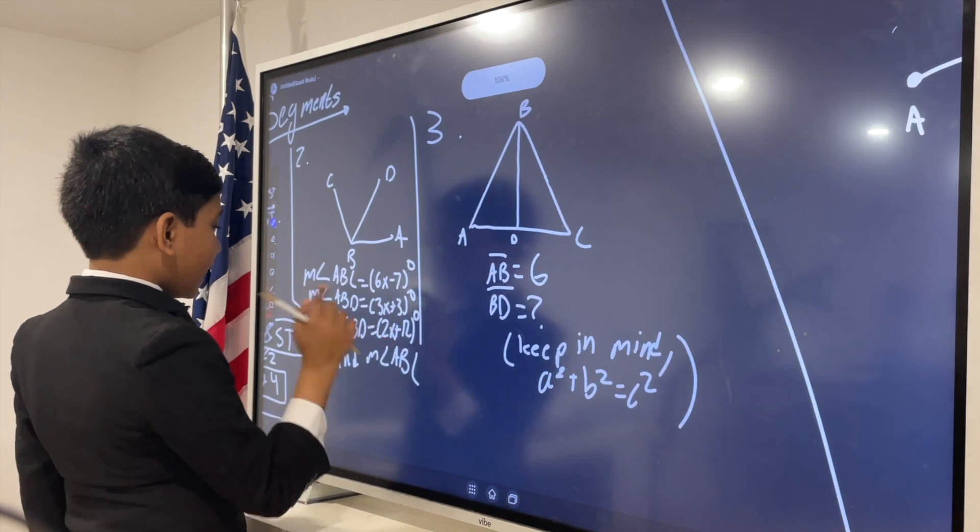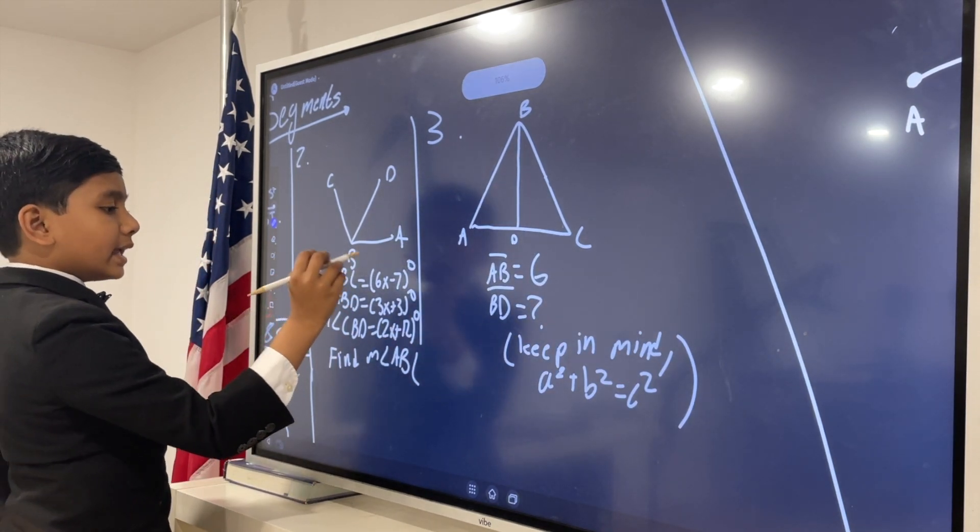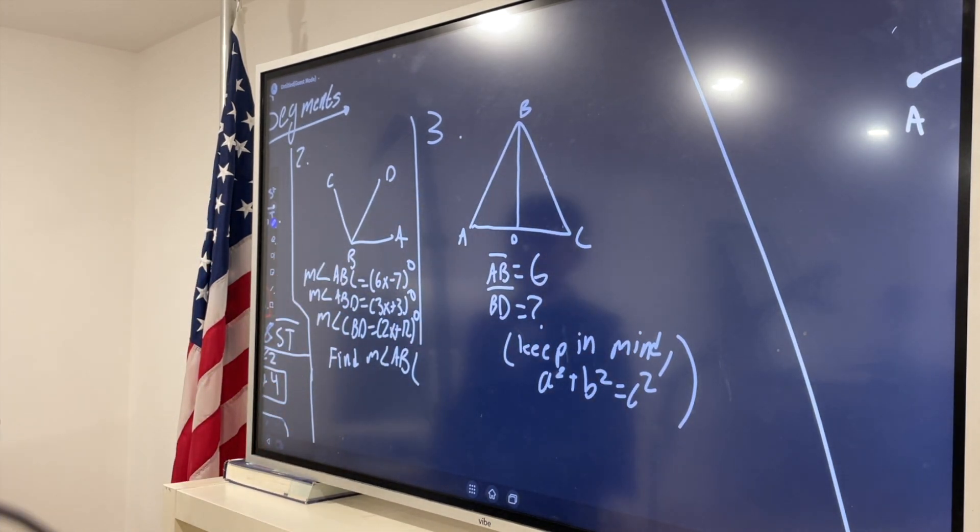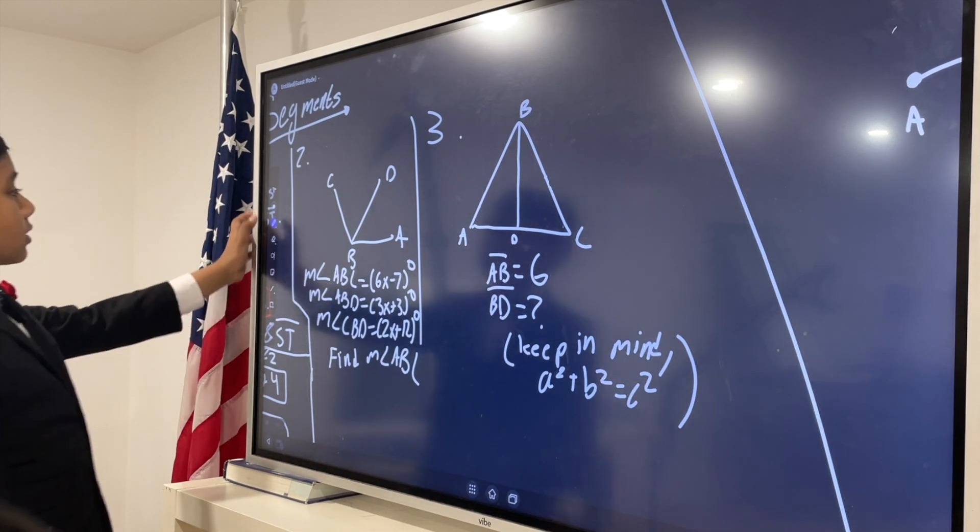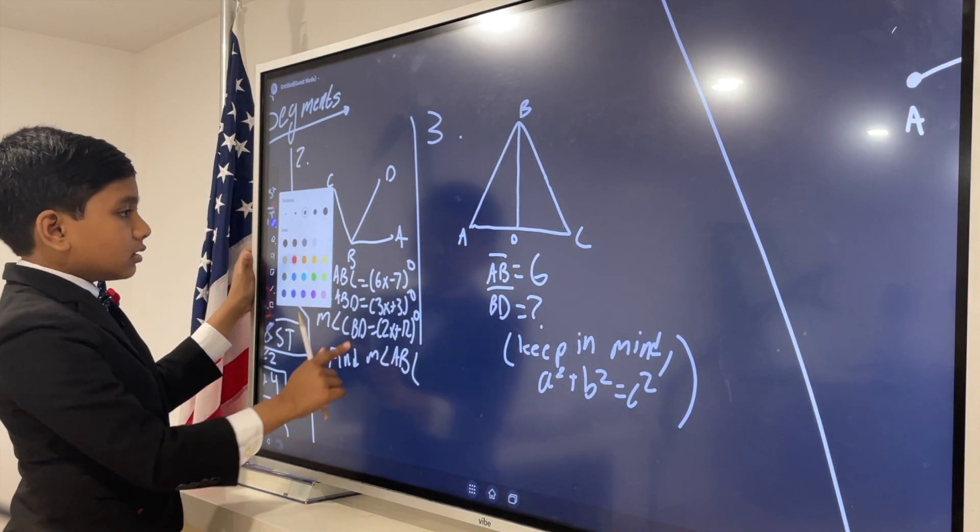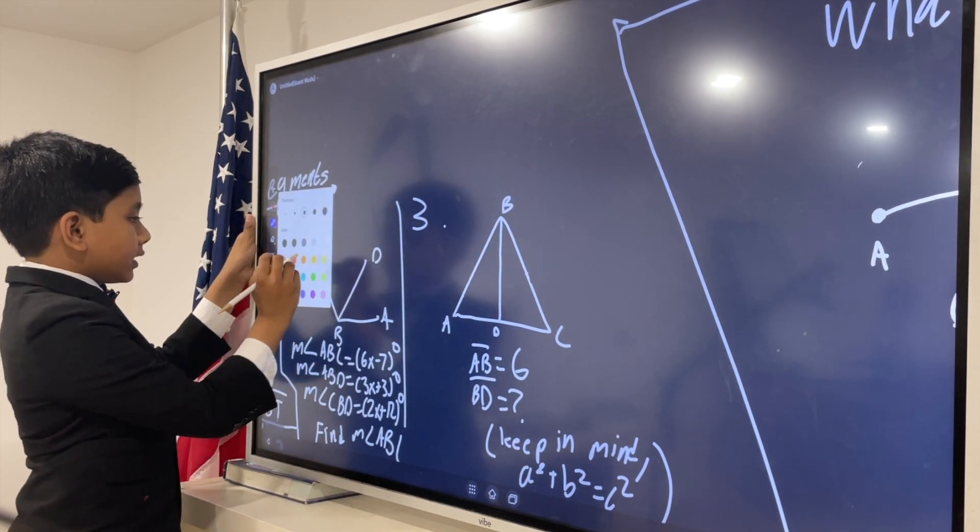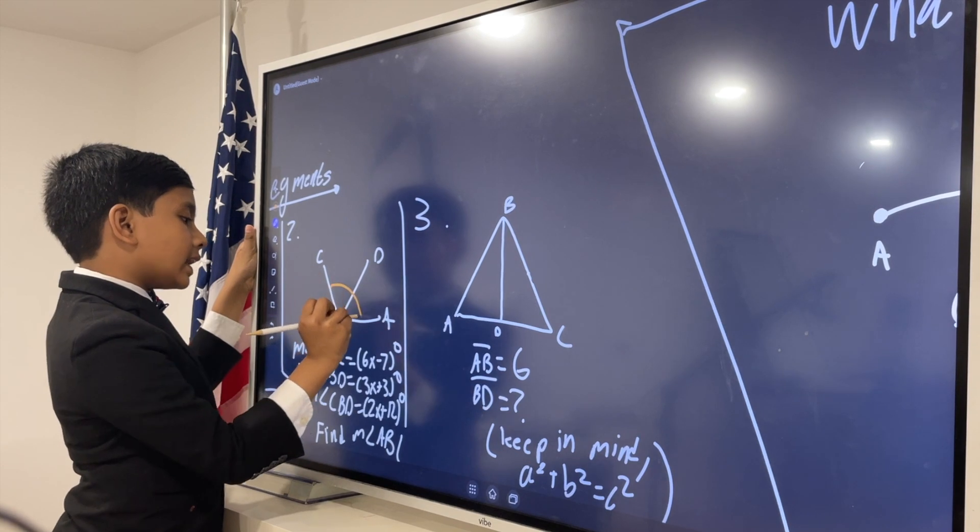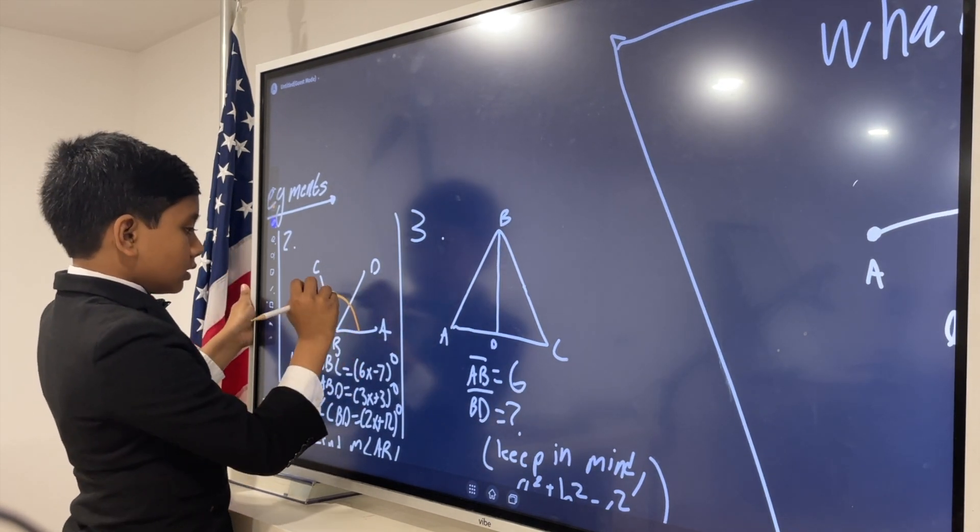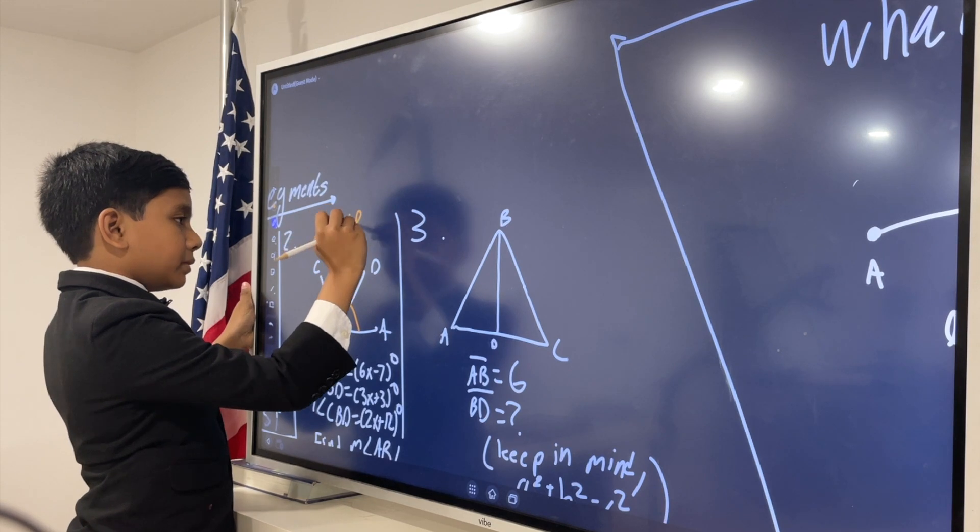We have angle ABC is equal to 6x minus 7 degrees. So, what is ABC? Well, I'm going to draw ABC using this big orange angle. You'll see why. So, this is ABC.